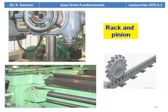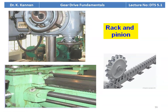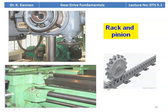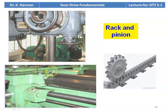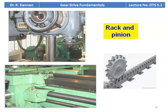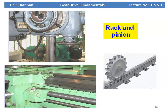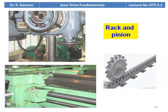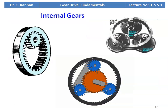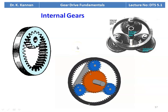The rack and pinion mechanism also comes under gear drive. It has a sliding element (the rack) and a rotating element (the pinion). This mechanism is found in drilling machines and on the bed of the lathe, where the rack and pinion provides horizontal movement of the carriage along the bed. Internal gears are used in planetary gear drives and for specific applications such as watch mechanisms.